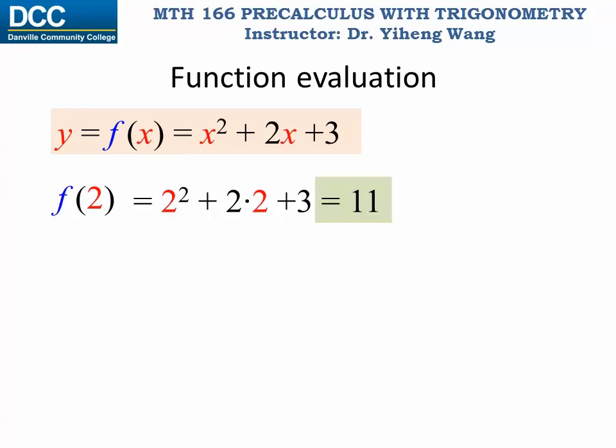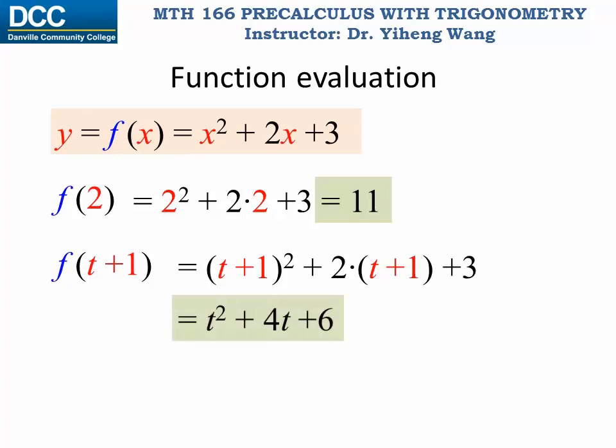If you are asked to evaluate f at t plus 1, you follow the same rule, and replace all the x with t plus 1. Do the calculation, and rearrange, and get the answer. So the function f evaluated at x equals t plus 1 is t squared plus 4t plus 6.